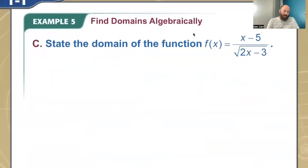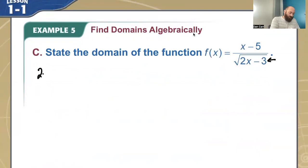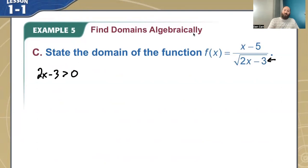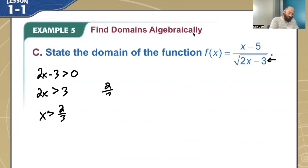For another example, we can combine two ideas. The two rules we've talked about: you can't square root a negative, and you cannot divide by 0. With a square root in the denominator, it can't be greater than or equal to 0 alone — it has to be strictly greater than 0. So we say 2x minus 3 has to be greater than 0. Any other value: if it equals 0 we're dividing by 0, and if it's less than 0 we have a negative inside the square root. Solving: 2x is greater than 3, divide by 2, so x is greater than 3/2. Parentheses on both 3/2 and infinity because it's strictly greater than 0.